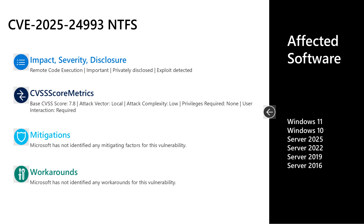The first vulnerability I'll cover is CVE-2025-24993, an Important-rated remote code execution vulnerability in NTFS. This was privately disclosed, but exploitation has been detected in the wild. It has a base CVSS score of 7.8 — the attack vector is local, attack complexity is low, no privileges are required, but user interaction is required. There are no documented mitigations or workarounds. Affected software includes all versions of Windows in mainstream support: Windows 10 and 11 on desktop, and Server 2016 through Server 2025.